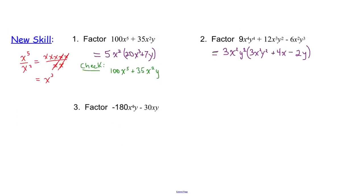One more example: negative 180x⁴y minus 30xy. The GCF of -180 and -30: they both have a negative in common, and they both share 30. So the greatest common factor for the coefficients is -30.